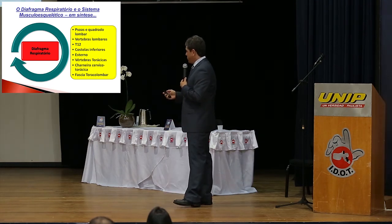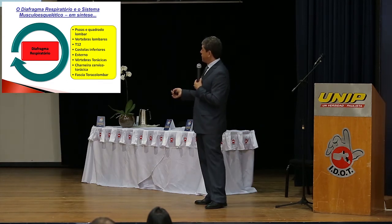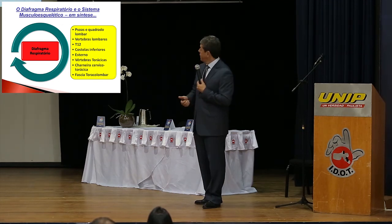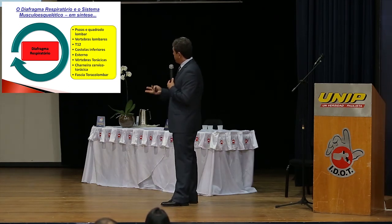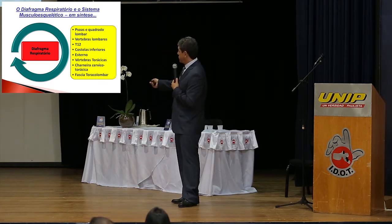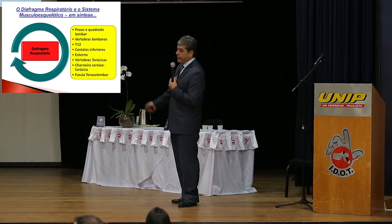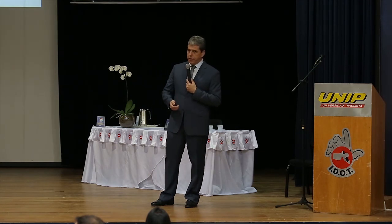De forma geral, listando o sistema músculo-esquelético em síntese, o diafragma respiratório está relacionado ao psoas e ao quadrado lombar, às vértebras lombares, T12, costelas inferiores, esterno, vértebras torácicas, charneira cérvico-torácica e fáscia tóraco-lombar. Portanto, qualquer disfunção nessas estruturas pode repercutir no diafragma, ou disfunções diafragmáticas caracterizadas por tensões anormais podem repercutir nessas estruturas. Querer entendê-lo como separado do corpo é impossível.